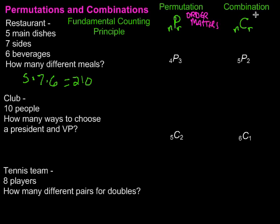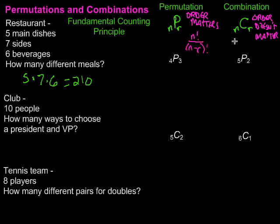The formula for a permutation is N factorial over N minus R factorial. A combination is very similar, but since order doesn't matter, we need to get rid of the duplicate arrangements. So the formula is N factorial over R factorial times N minus R factorial. That extra R factorial gets rid of the duplication when order doesn't matter.